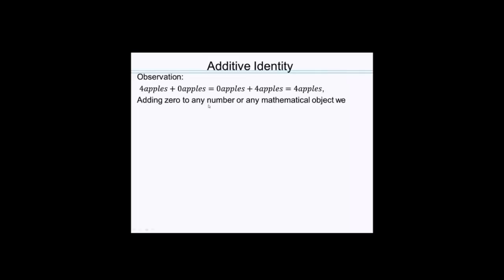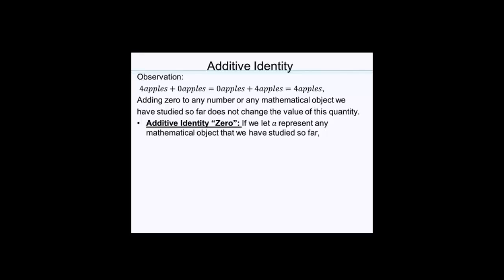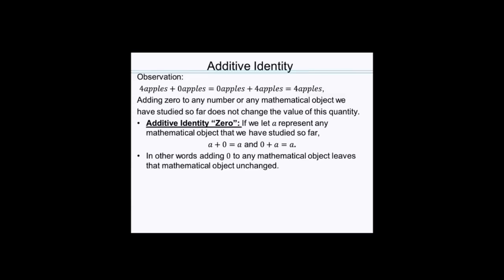The next item is identity. If you have 4 apples plus 0 apples, or 0 apples plus 4 apples, you still end up with 4 apples — because you had nothing more to count. Adding zero to any mathematical object we have studied does not change the value of that quantity, which is why it's called the additive identity. If A represents any mathematical object, then A + 0 = 0 + A = A. The number zero is the additive identity.